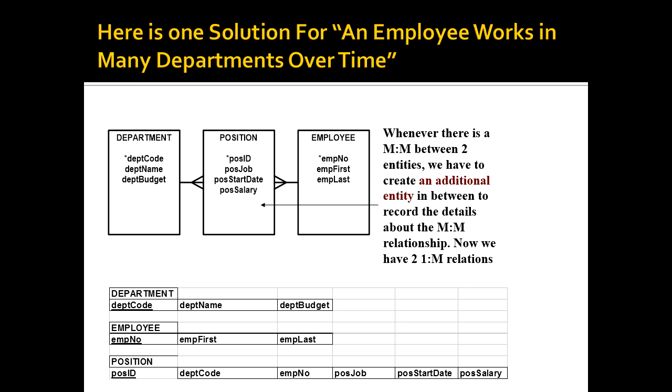And you see that often, not always, but often these intersection tables seem to work out to be very good logical places to store other information that really describes, more than anything else, information about this particular relationship between the two outer entities. Relationship between the employee and the department. What job position was it? When did they start in that position, and so on.